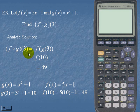Therefore, f circle g of 3 is equal to 49.